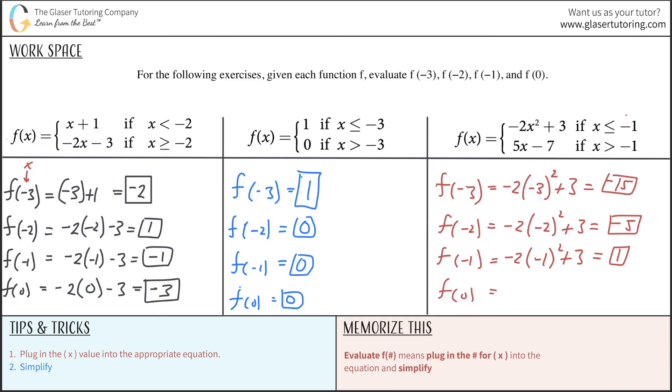And now f of 0. We now change the function because 0 is now greater than negative 1. So I'm going to use this function. So this is 5 times 0 minus 7. And obviously that's just going to be negative 7. There you go, ladies and gentlemen. Hope this helped. All you got to do is basically just plug in the values and simplify. So look forward to helping out the next problems. Please remember to subscribe. I'll see you then. Bye.